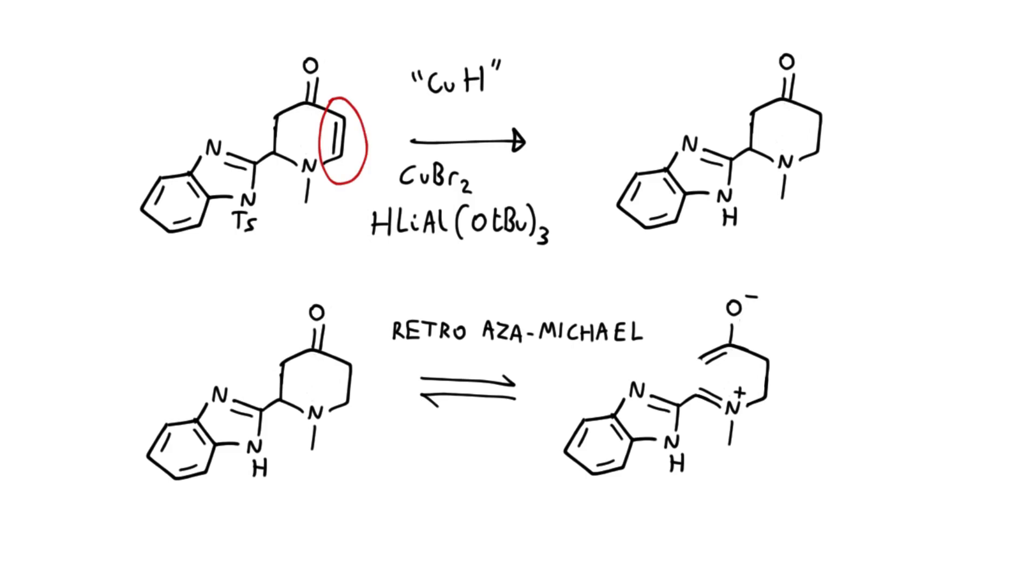The next step is the reduction of this undesired extra double bond, and this took a fair amount of optimization because they were finding that a lot of the reagents over-reduced the ketone to the hydroxy group as well. Eventually the reagent of choice turned out to be some kind of copper hydride species, which was generated in situ by the combination of copper bromide and lithium tri-tert-butoxy-aluminium hydride.